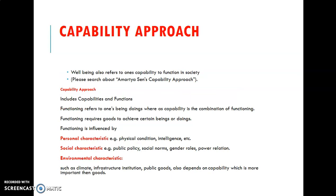The capability approach was discussed by Amartya Sen. Well-being also refers to one's capability to function in society. As discussed previously, well-being refers to income and basic needs. Amartya Sen's capability approach includes two components: capabilities and functions.